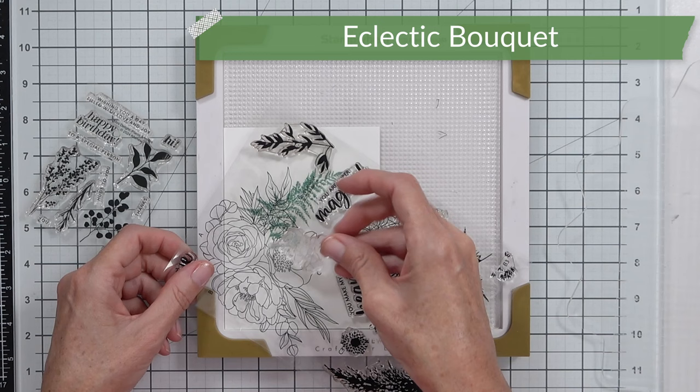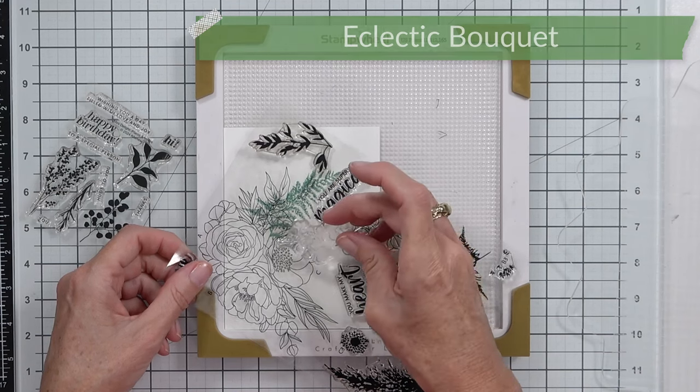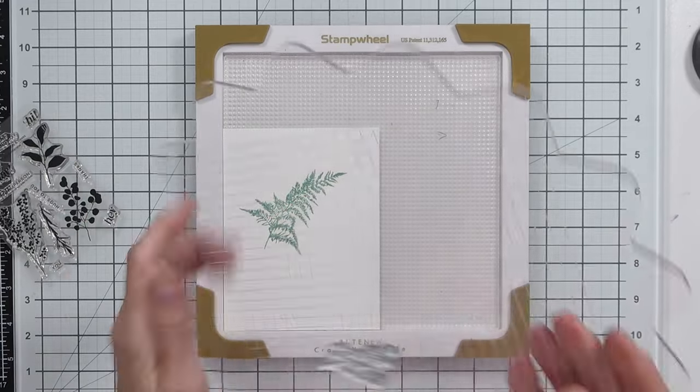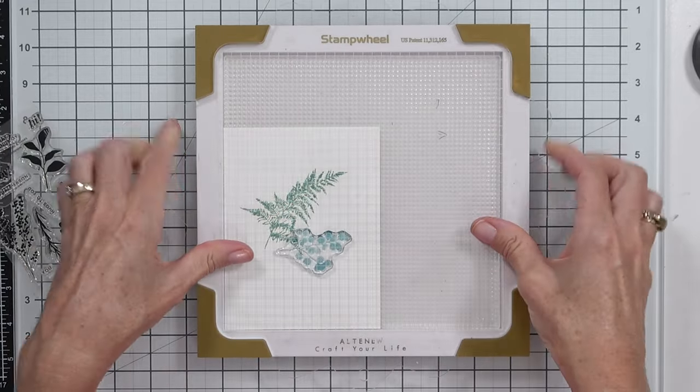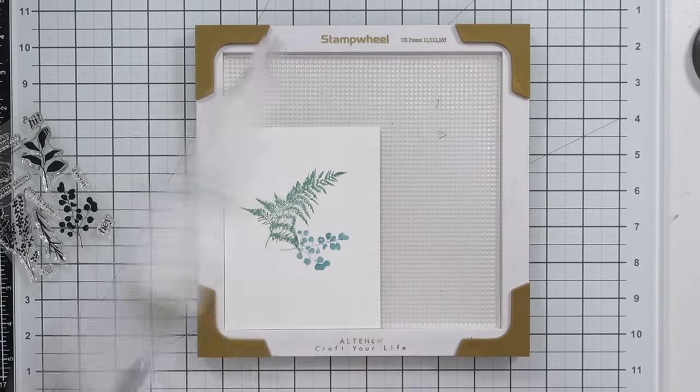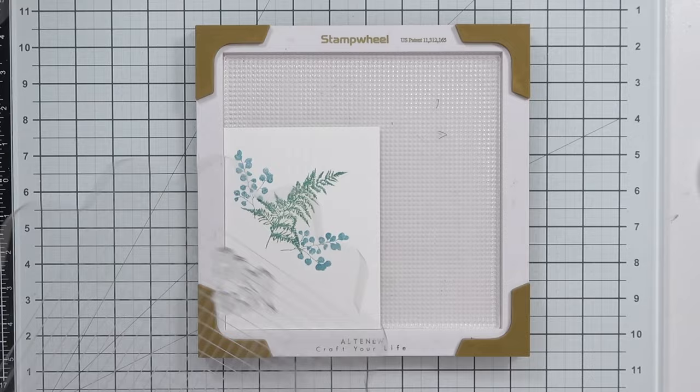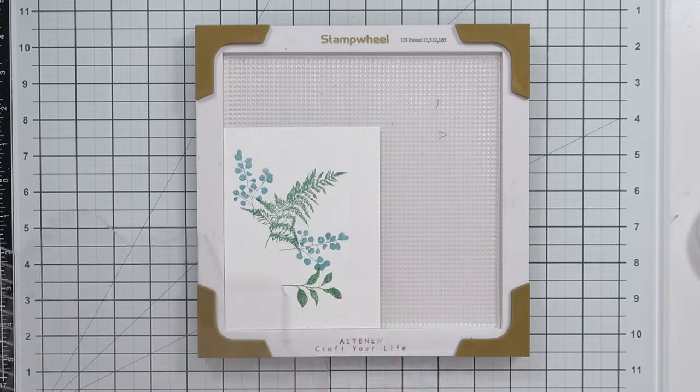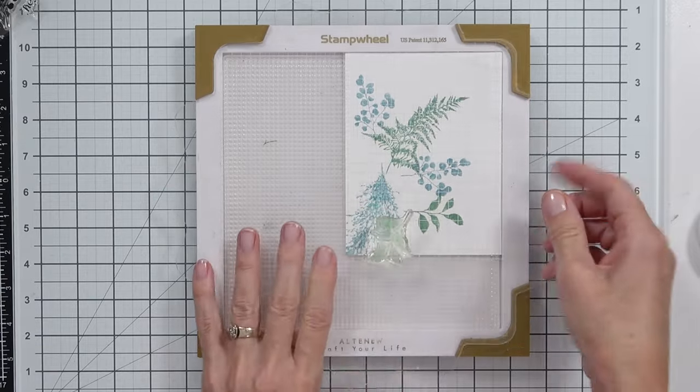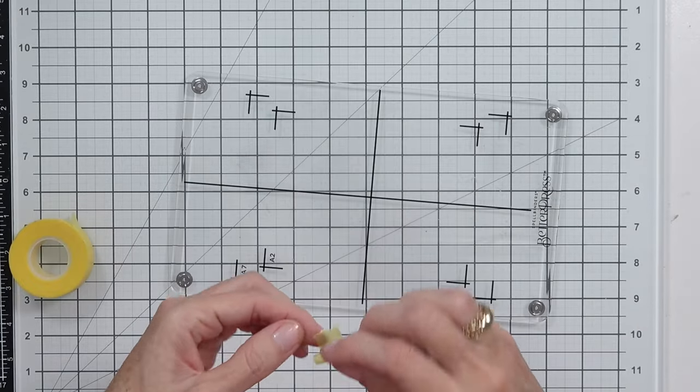This is going to be the panel for the blind letterpress, and what that simply means is that we are going to have the impression or the debossed kind of look, but we're not going to be using any ink. So blind letterpress is basically exactly the same as letterpress but you're not adding the ink.